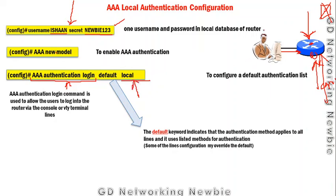The router needs to check a database of usernames and passwords. Since the database is on the local machine at this point, we use the keyword `local` at the end of the command.